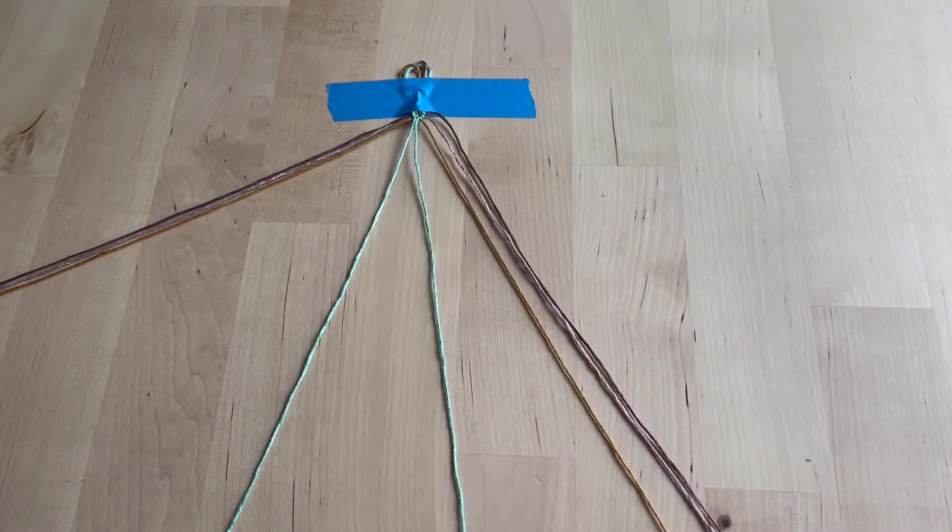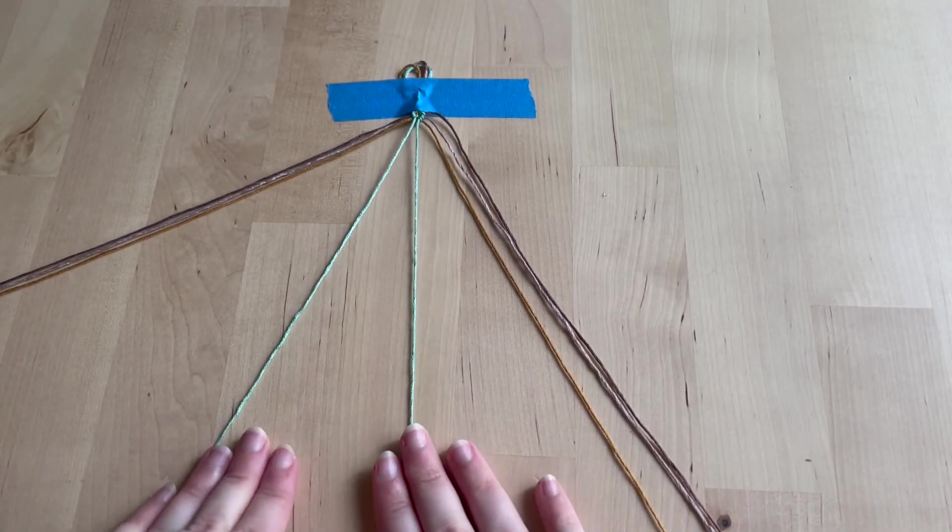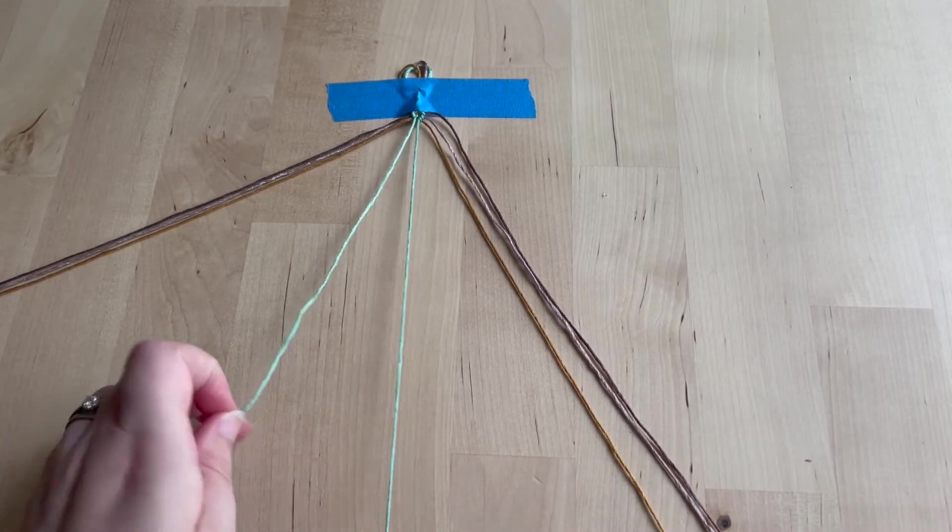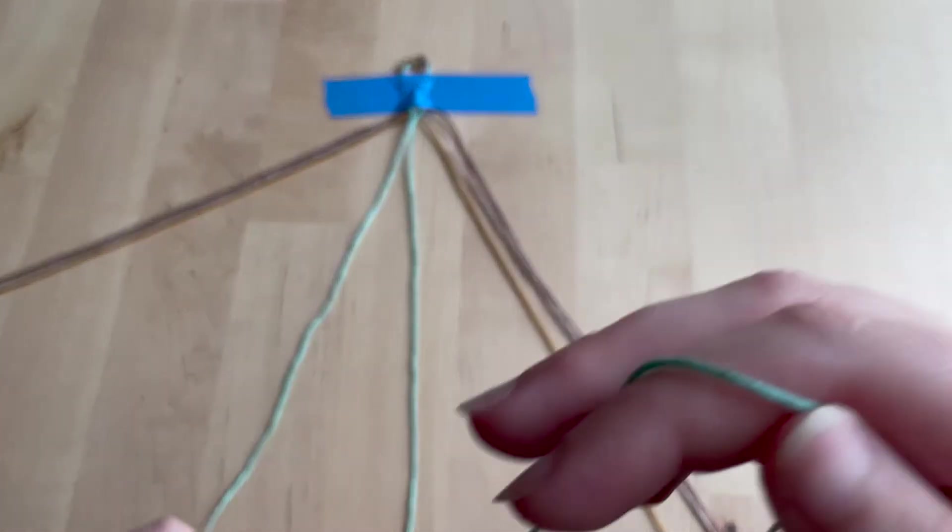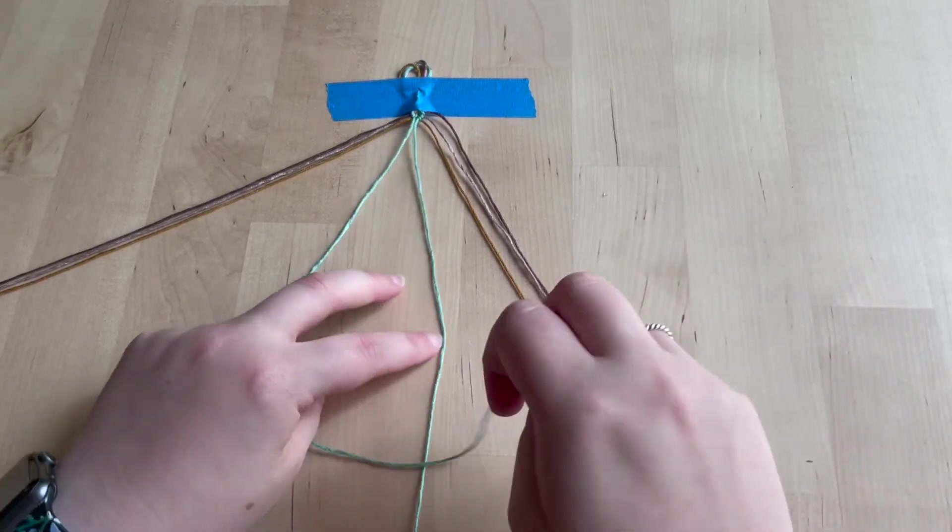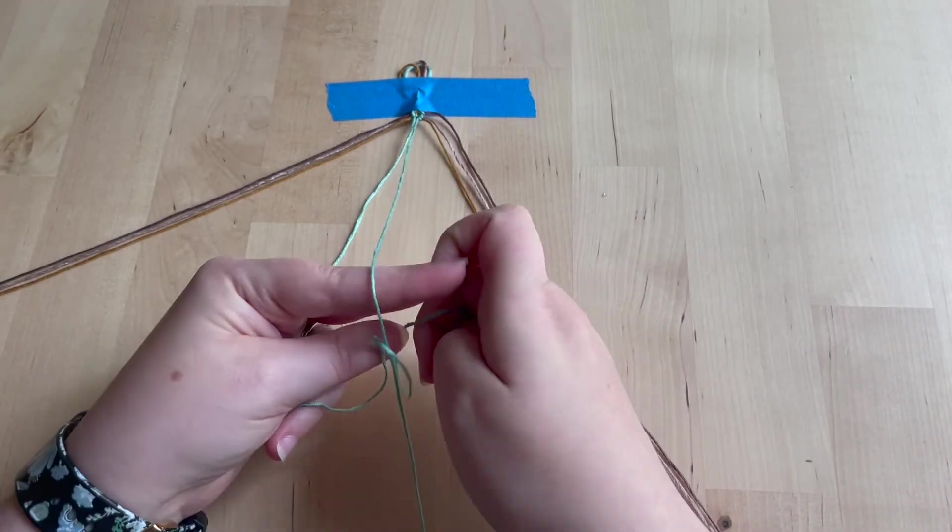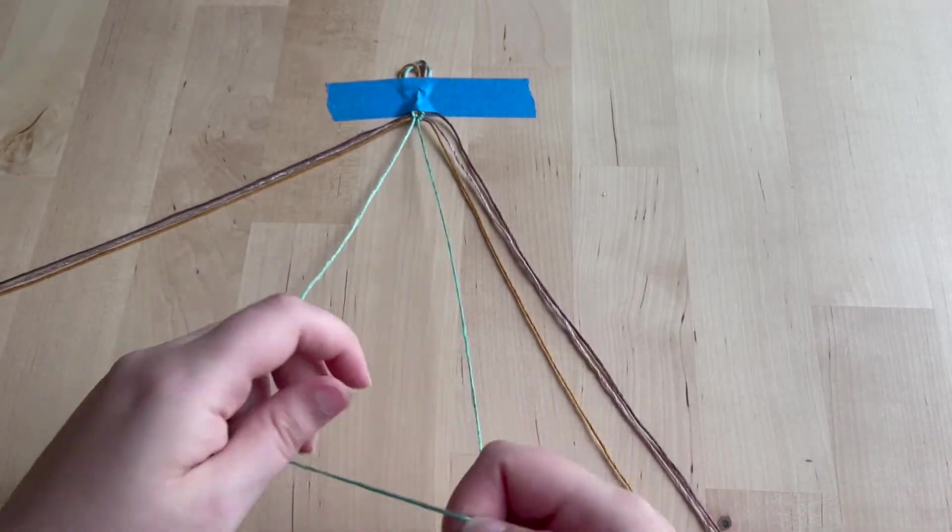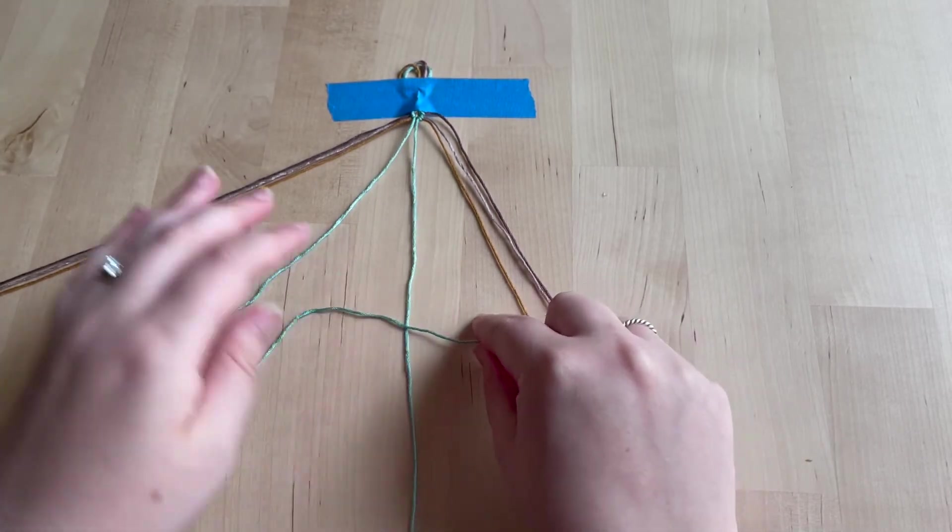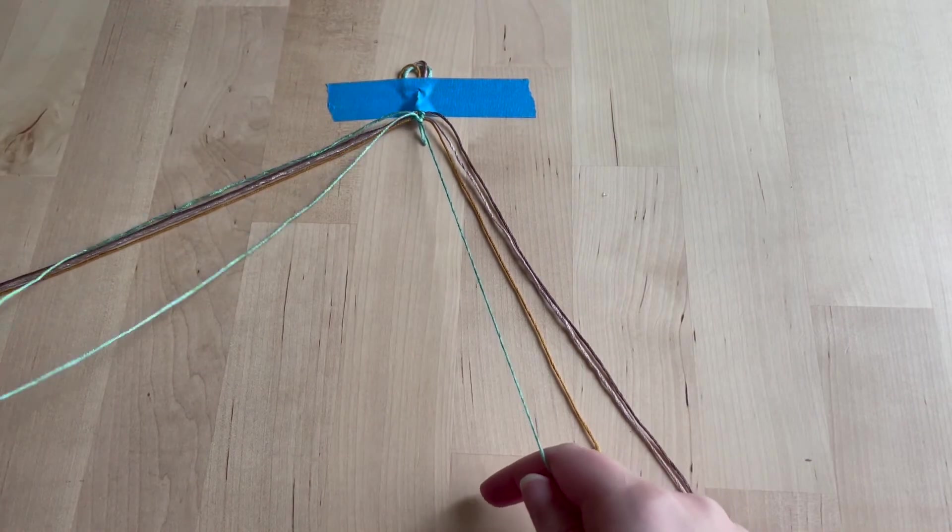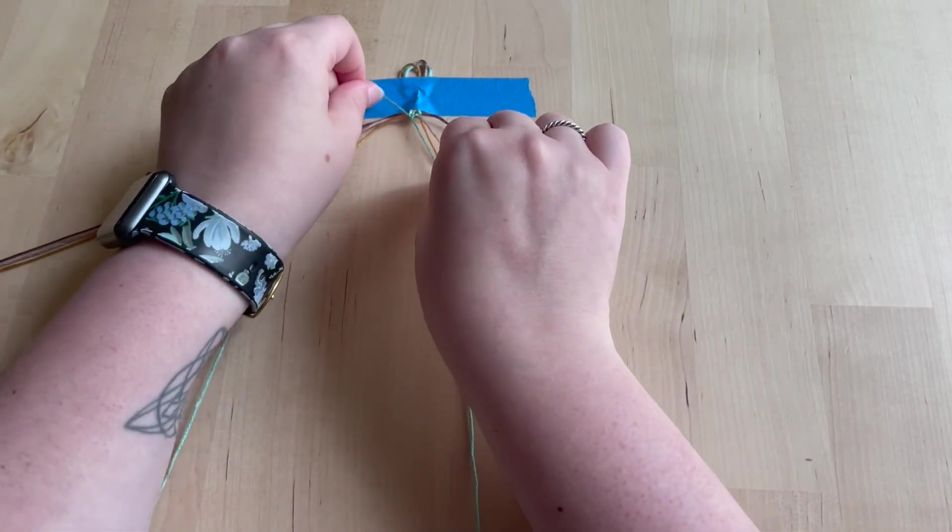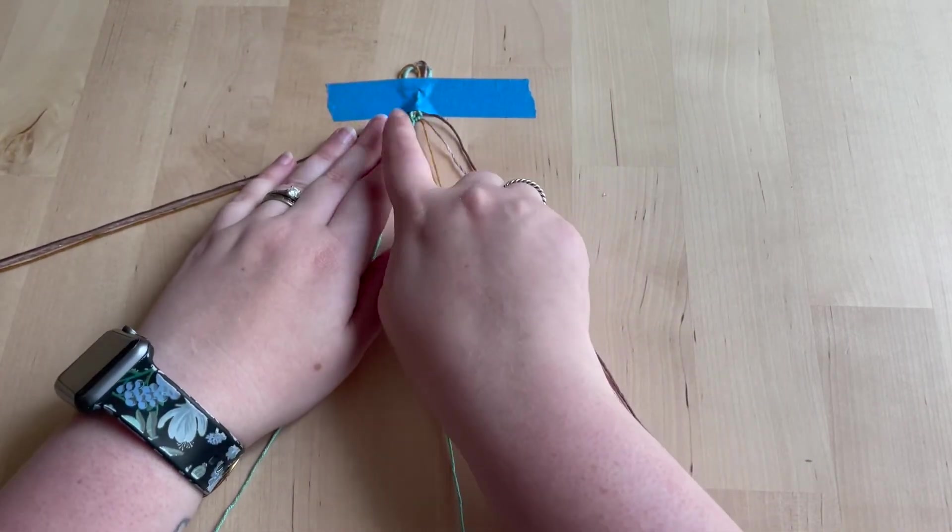Okay, so now the two strands that we started with are in the middle. To complete our chevron, we just need to do a knot with the two middle strands, and it doesn't matter which one. I'm gonna go forward by making my four. So now they're together and there's a little tiny V up there.